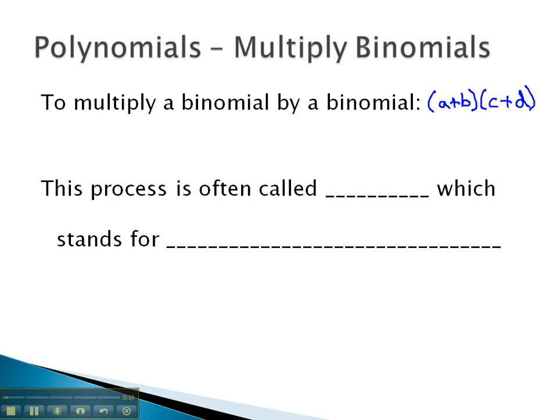What we will do is we will distribute each term of the first binomial. In other words, we will distribute the a through the parentheses, and then we will come back and distribute the b through the parentheses.